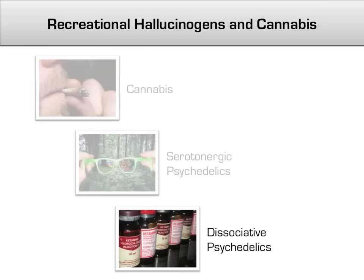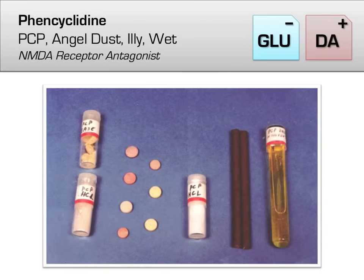The last class of drugs are known as dissociative psychedelics. In contrast with serotonergic psychedelics, which affect the senses primarily, these drugs are characterized by a state known as dissociation, where the person does not feel connected with their body. Dissociative psychedelics work by antagonizing the glutamate receptor, specifically the NMDA subtype. The first dissociative psychedelic we will cover is phencyclidine, or PCP.